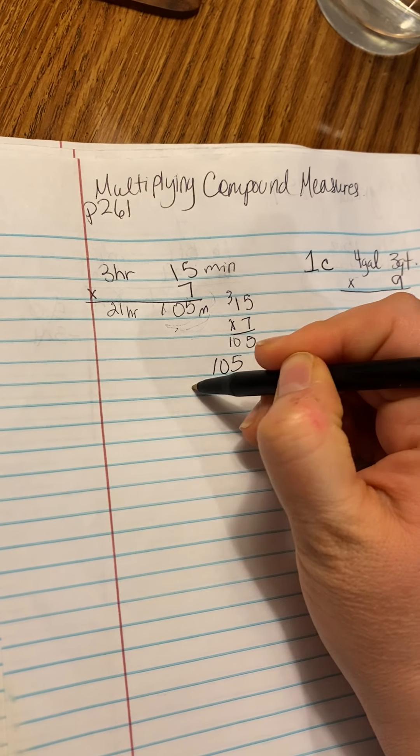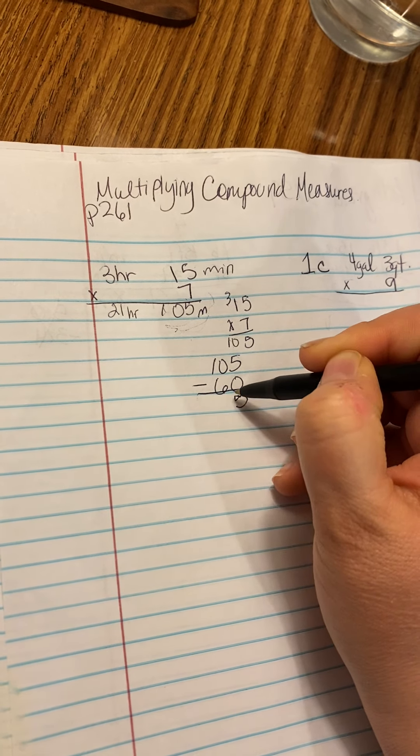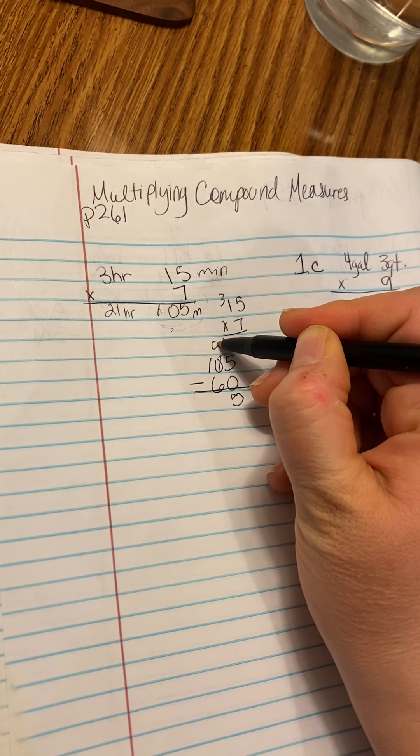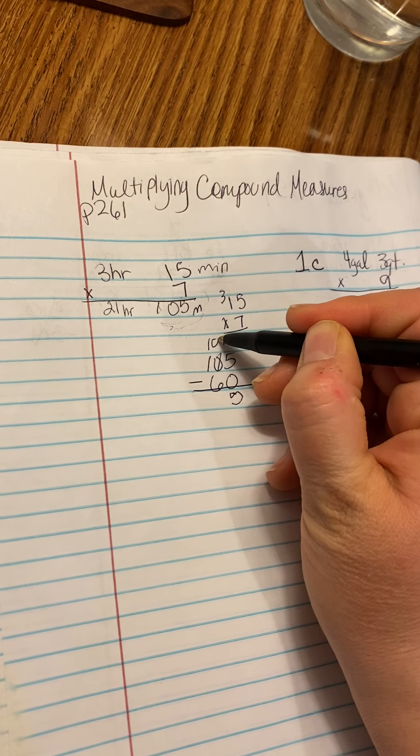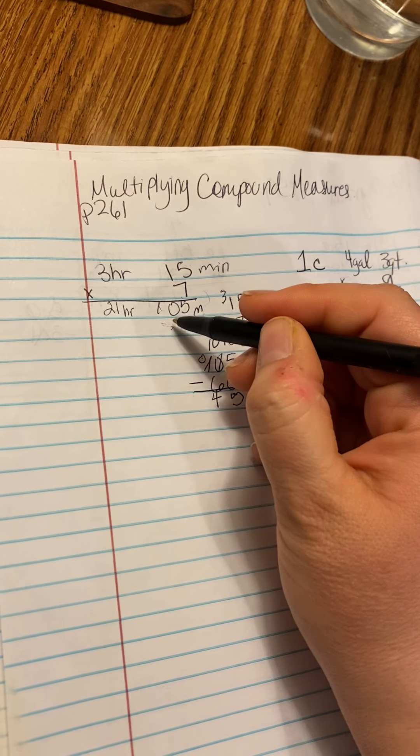So let's do 105 minus 60, 5, and then 9, I'm sorry, 10, and then this becomes 0. So 45.